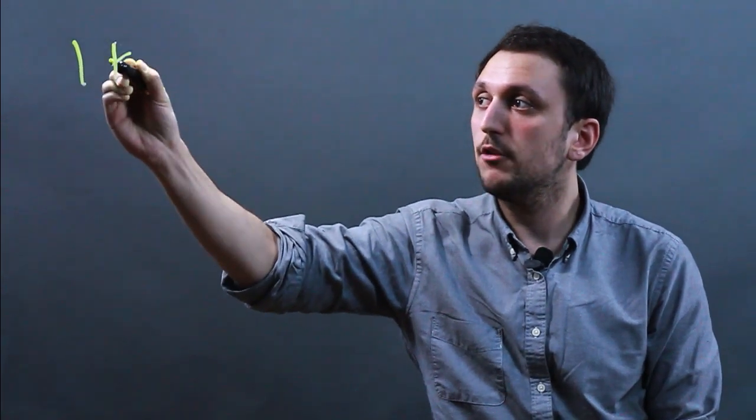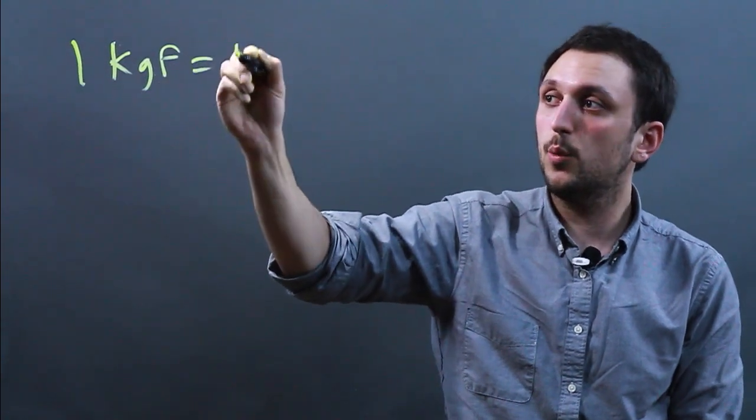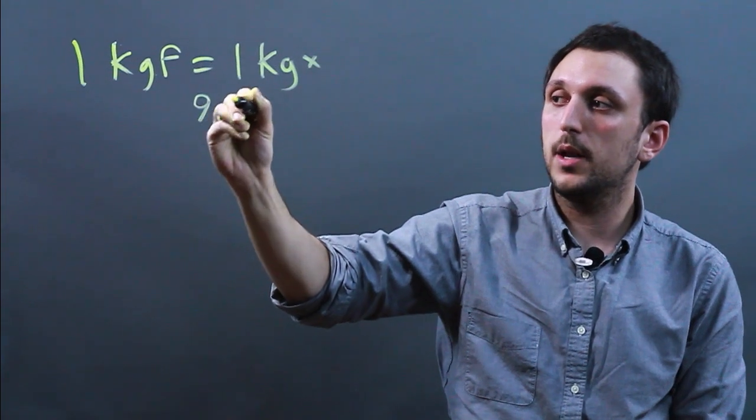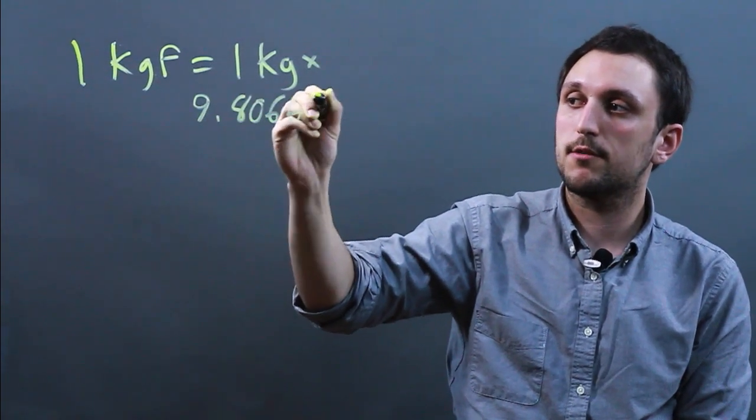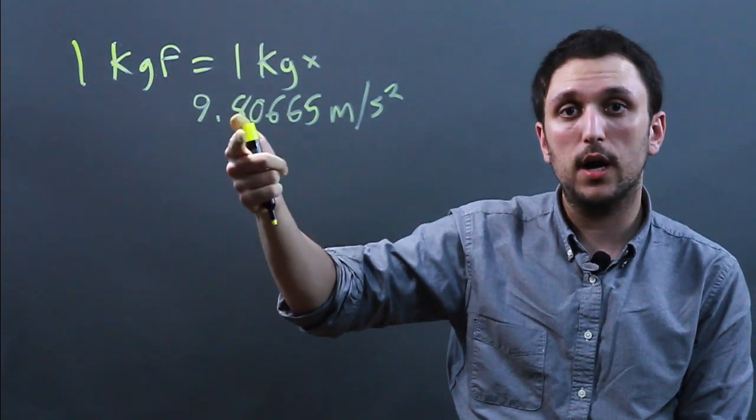So we say 1 kgf, which is a kilogram force, equals 1 kilogram of mass times 9.80665 meters per second squared, and this is the average gravitational field on Earth.